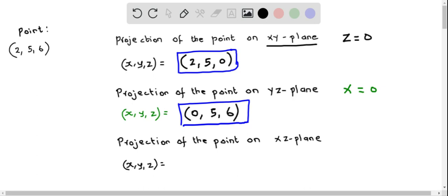Now let's find on the xz plane. And xz plane y equals 0. So we have to replace y coordinate by 0 from the given point. So therefore it becomes 2 comma 0 comma 6. So this is the point which is projected on the xz plane.